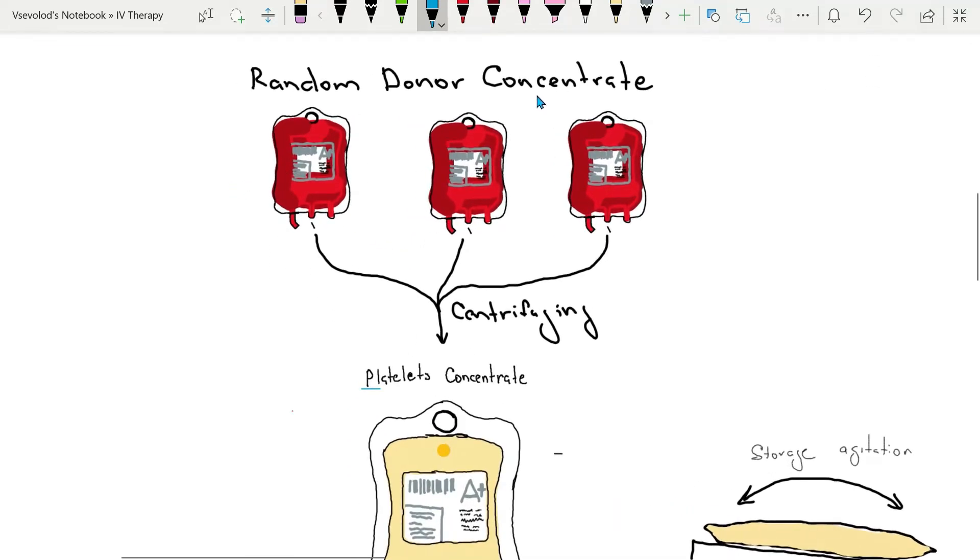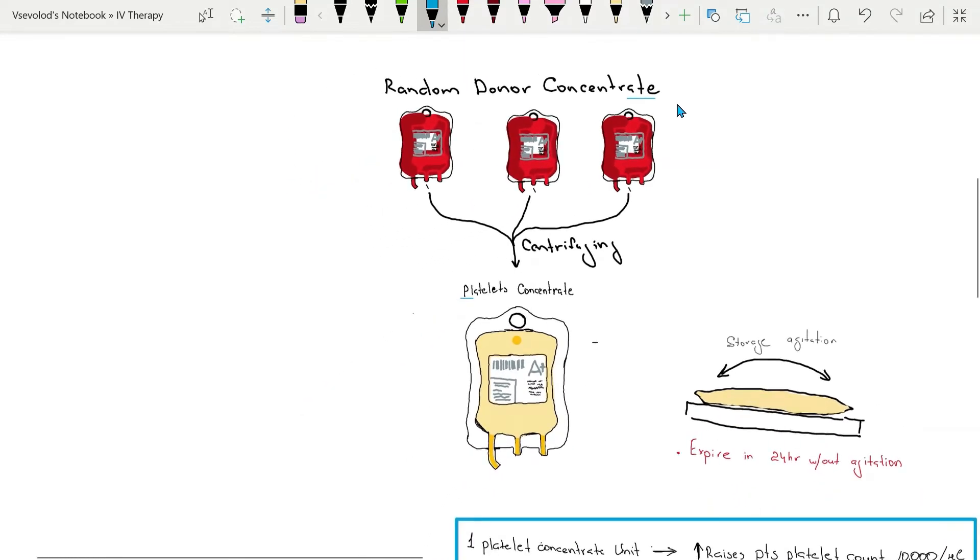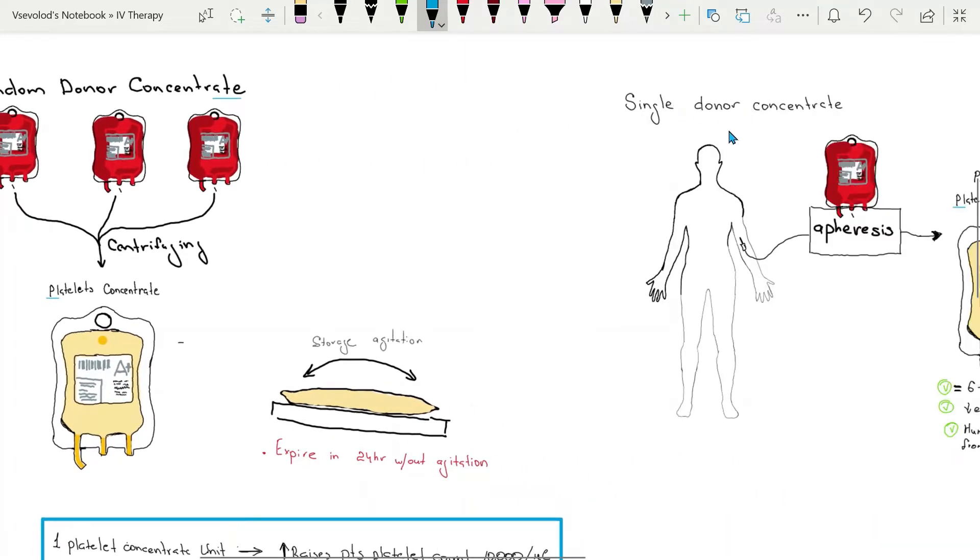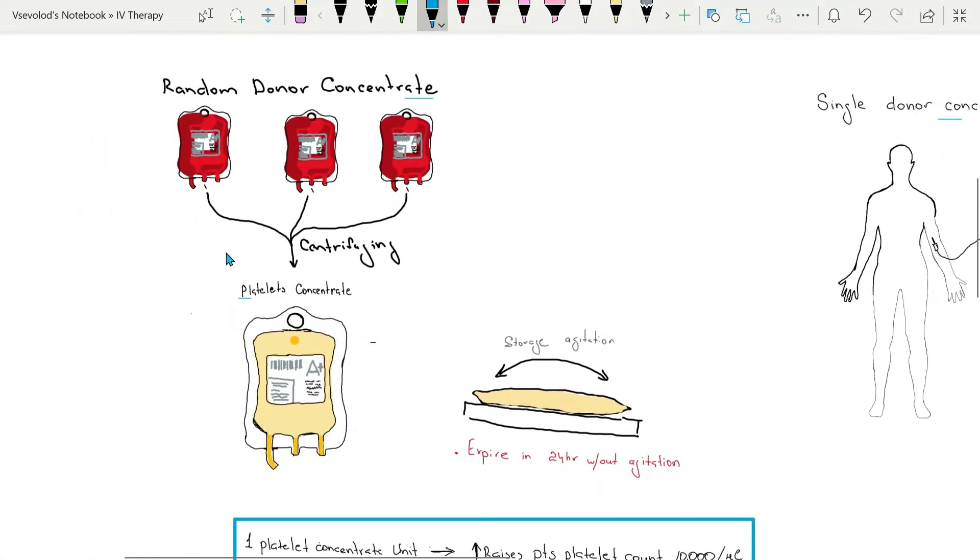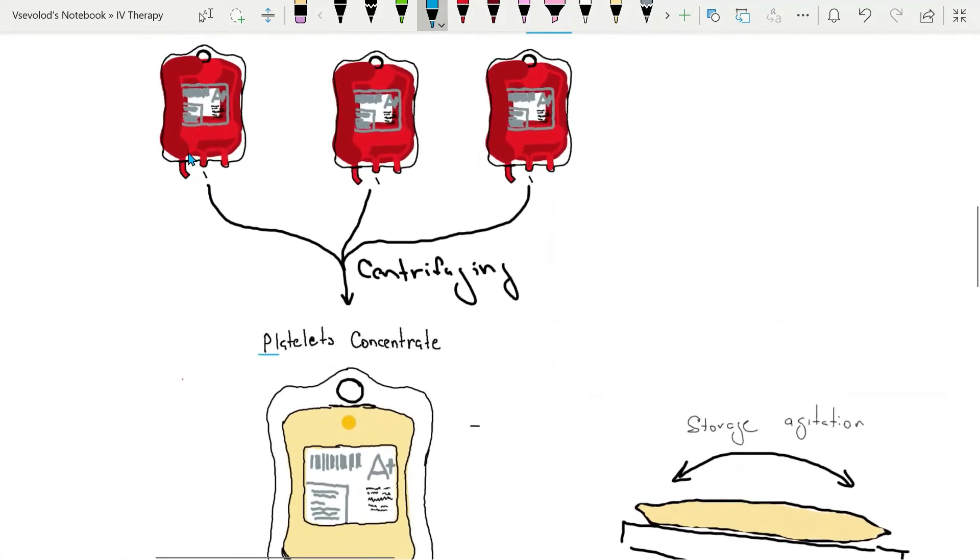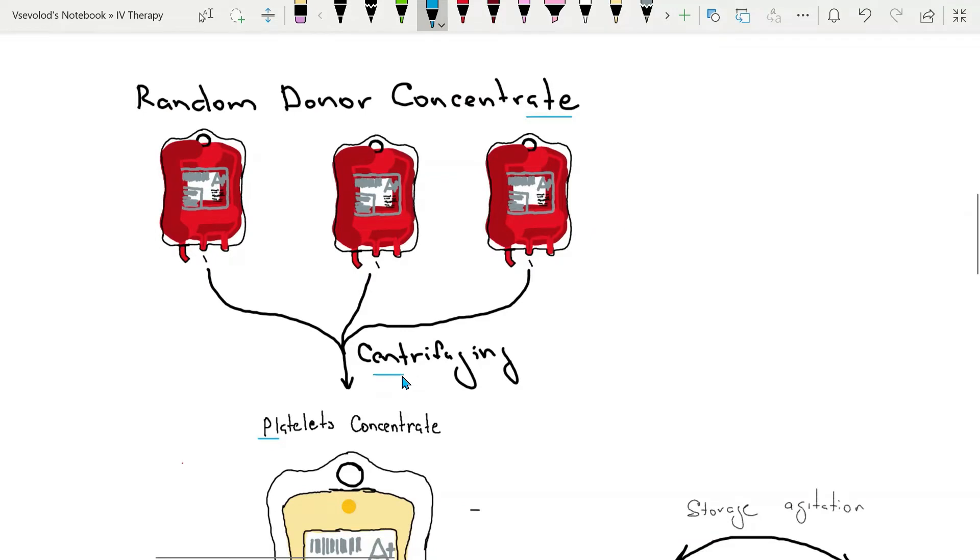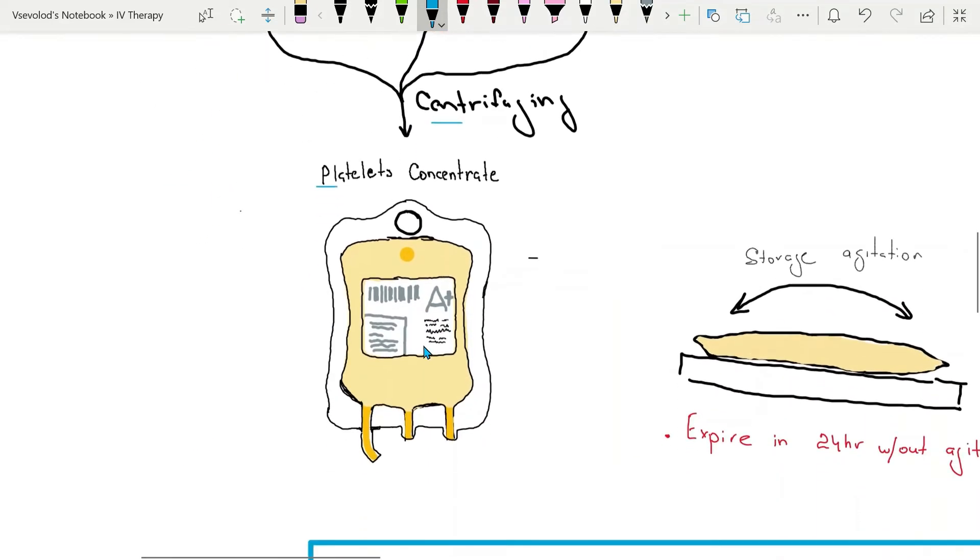Platelets can be supplied either as random donor concentrates or from single donor apheresis. Random donor concentrates are prepared from individual units of whole blood by centrifuging the unit to separate the platelets.